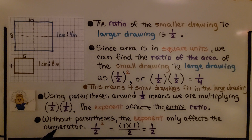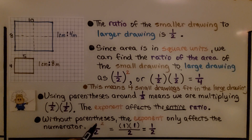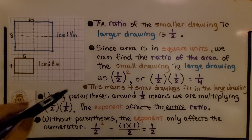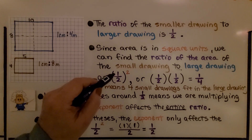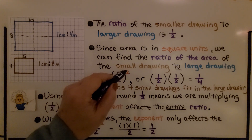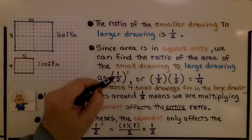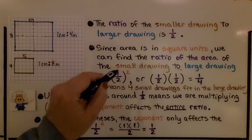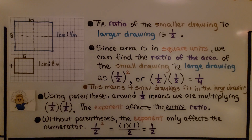Using parentheses around the one-half means we're multiplying one-half times one-half — the exponent affects the entire ratio. Without parentheses, the exponent only affects the numerator, giving us one times one over two, which is just one-half. So it's very important to put parentheses around the fraction to show the exponent affects the entire fraction, otherwise it only affects the numerator.